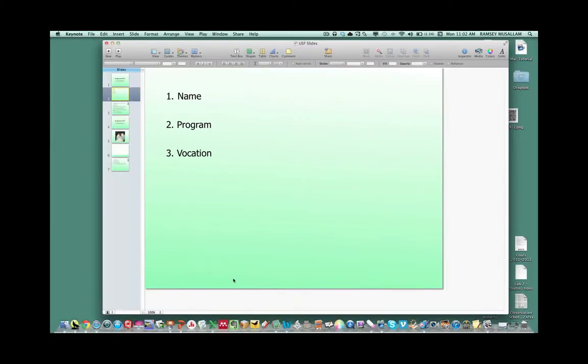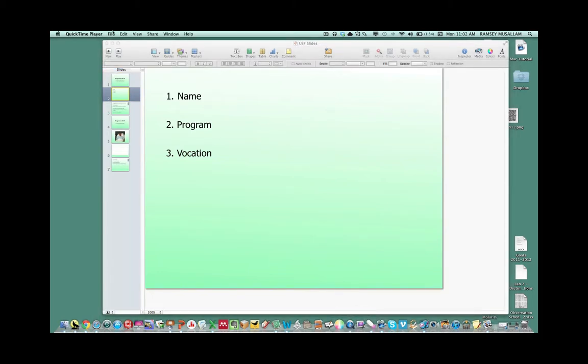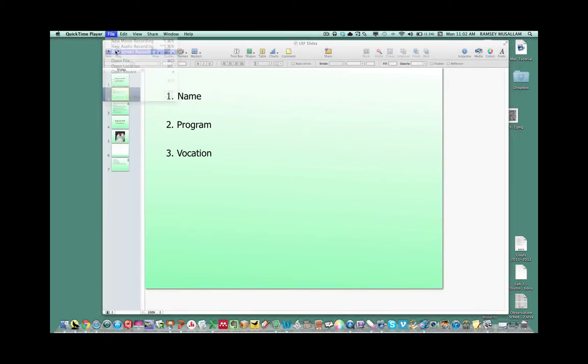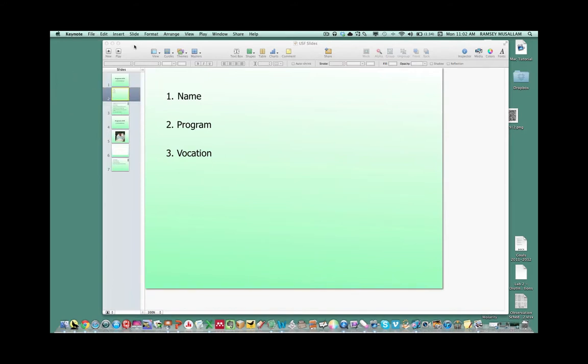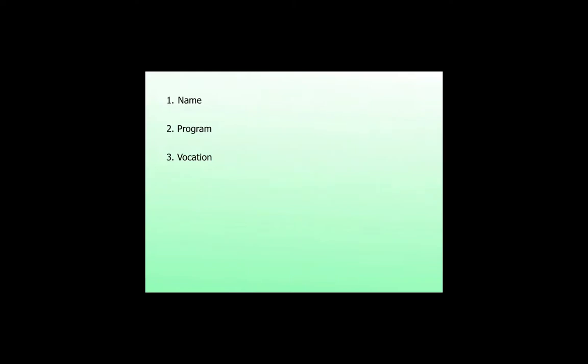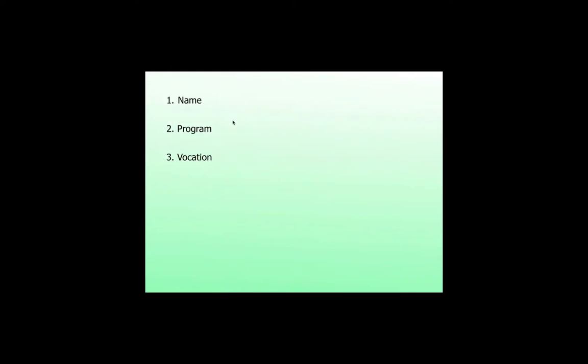You're going to do the exact same thing we did before. We're going to open up QuickTime, go to File, go to New Screen Recording. Just like last time, we're going to choose to record the full screen and then minimize this. Once we're in presentation mode, we're going to hit our keystrokes and do our annotations throughout our presentation.